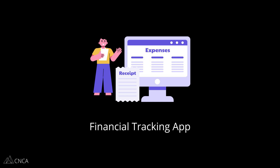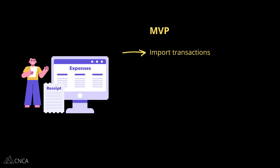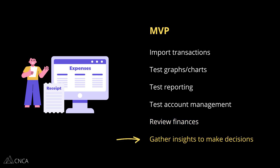Here's an example for a financial tracking application. The MVP for this app lets early users import a limited batch of transactions to test the graphical visualizations, the reporting functions, and account management. All they need from this app is a way to easily review their finances in an organized way so that they can gather the insights they need to make important financial decisions. This is a tool to help support life decisions. As long as they can get that data, the MVP is doing its job.